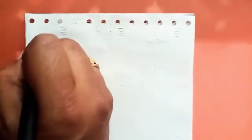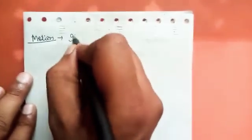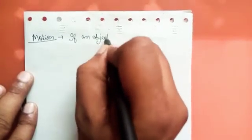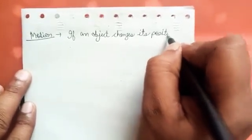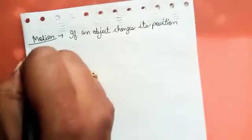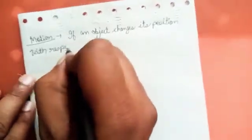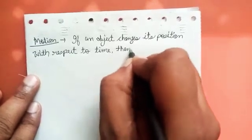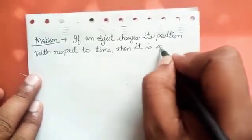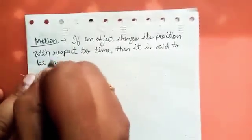Now in all these cases, the objects are changing their positions with time and hence are said to be in motion. So we can define motion as: if an object changes its position with respect to time, then it is said to be in motion.